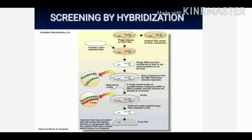In this method, as we can see in the diagram, first a replica plate is prepared, then the transfer of colonies on a nitrocellulose membrane is done. After this, the disc is treated so that the DNA denatures, i.e., the strands separate. In the next step, a single strand probe is added and the strands are allowed to anneal.